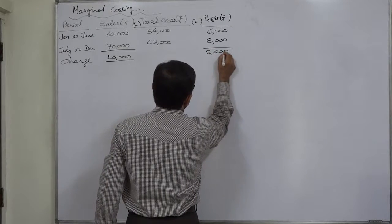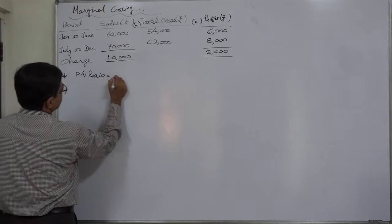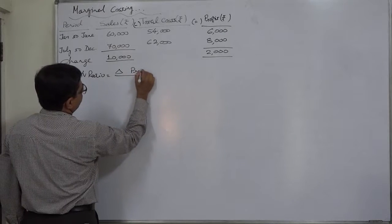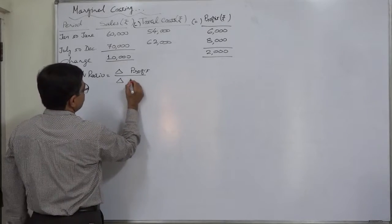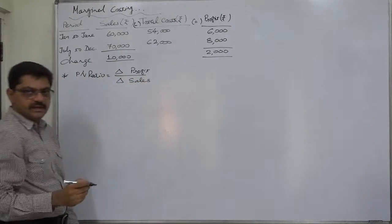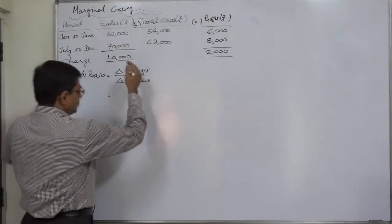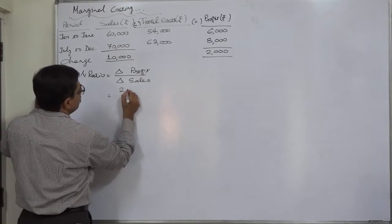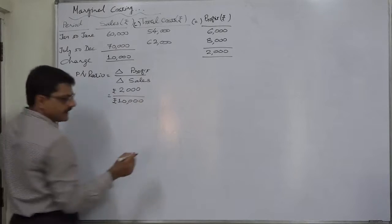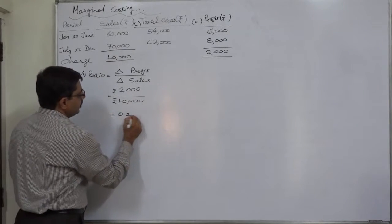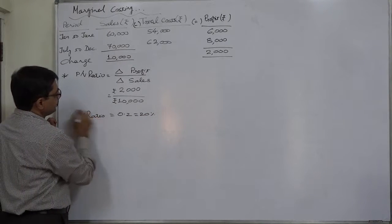Now we have change in sales of rupees 10,000 as well as change in profit of rupees 2,000. So now we can easily calculate the PV ratio. The formula for profit volume ratio is change in profit — you can use the sign delta, which is the sign of change or difference — upon change in sales. We get rupees 2,000 divided by rupees 10,000, giving us 0.2 or 20%. So the profit volume ratio comes to 20%.